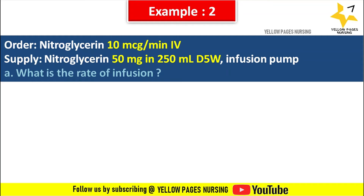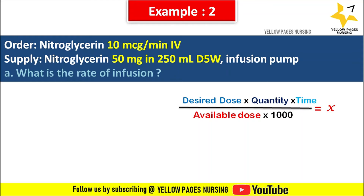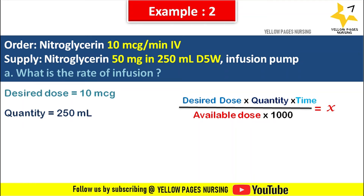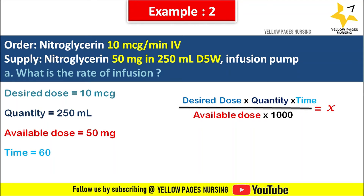The formula is: desired dose × quantity × time ÷ (available dose × 1000) = x. Here, the desired dose is 10 microgram, quantity is 250 ml, available dose is 50 mg, and time is 60 minutes.